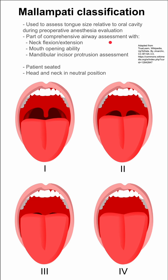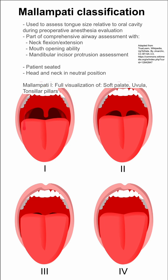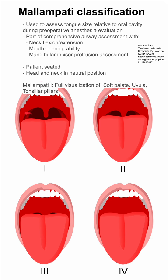The patient should be seated and their head and neck should be in a neutral position during this test. Mallampati 1 describes full visualization of the soft palate, the uvula, and the tonsillar pillars. So you can see the soft palate, the uvula, and the tonsillar pillars on the side.